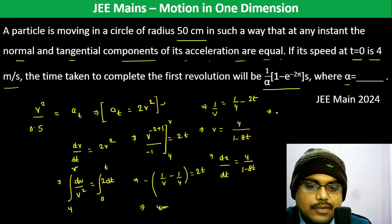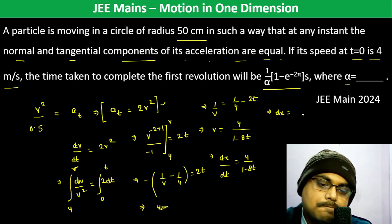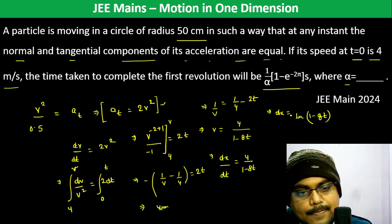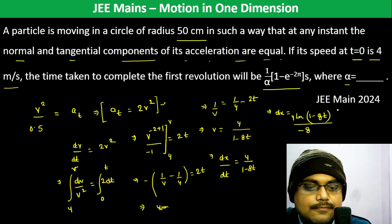Since dv/dt = 4 / (1 − 8t), integrating the displacement gives ln(1 − 8t) times 4 / (−8), evaluated from 0 to t.